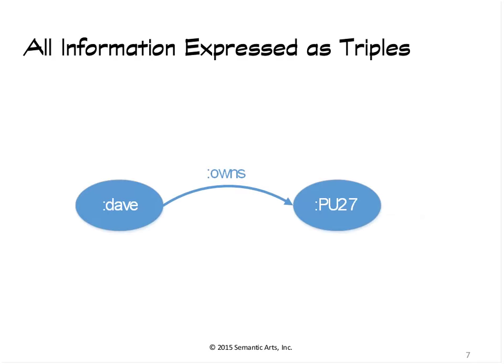The next distinction is that everything in semantics is expressed in what we call a triple. Triples have three parts: the thing on the left is called a subject, the directional arc in the middle is called a predicate, the thing on the right is called an object. It's a little tiny sentence. We call these assertions, and all information can be reduced to these kinds of assertions — not only raw data, like 'Dave owns a pickup truck,' but also metadata. Everything in this is a URI, so it identifies me, identifies what it means to own something, identifies this other object.